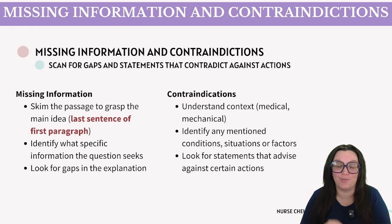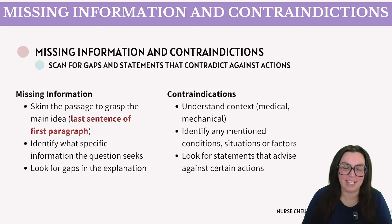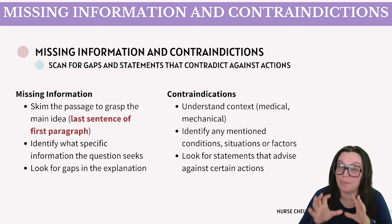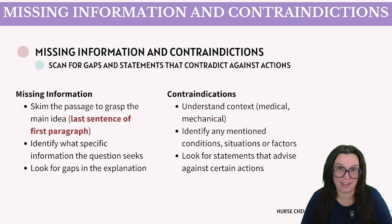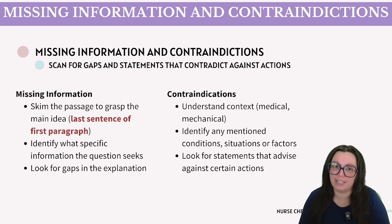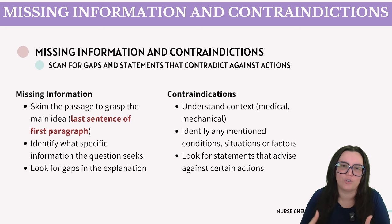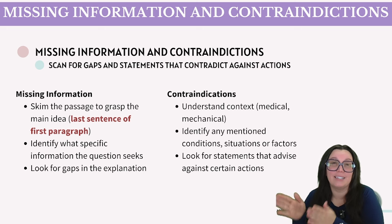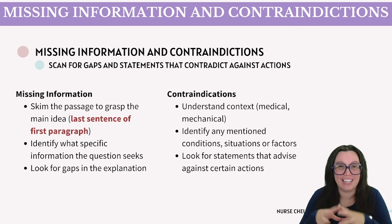Let's take a look at our final section: missing information and contraindications. For missing information, skim the passage to grasp the main idea — that's the last sentence of the first paragraph — identify what specific information the question is seeking, and look for gaps in the explanation. For contraindications, understand what the text is trying to convey — medical, mechanical, or otherwise — identify any mentioned conditions or factors, and look for statements that advise against certain actions.